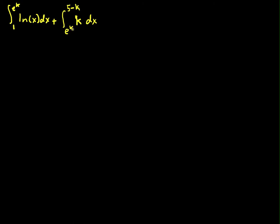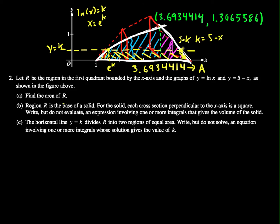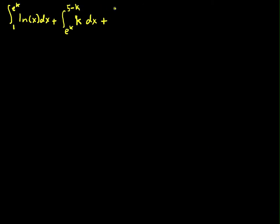And I could have even just done k multiplied by the difference between these. That would work out as well. Plus third integral. Integral from 5 minus k to 5 of 5 minus x dx.